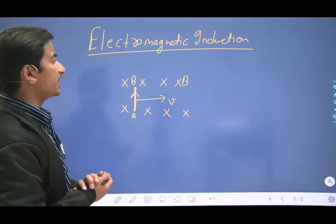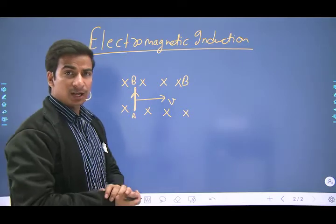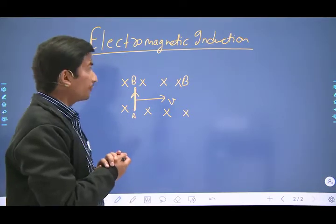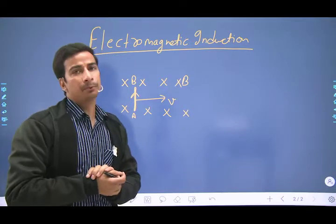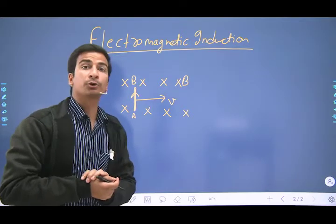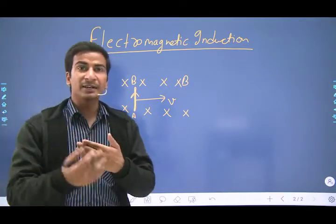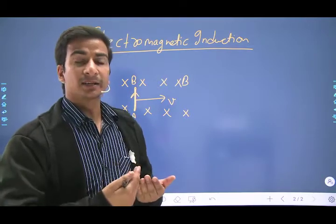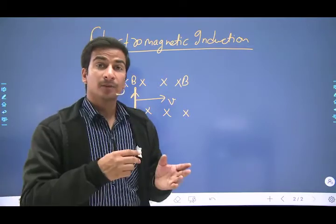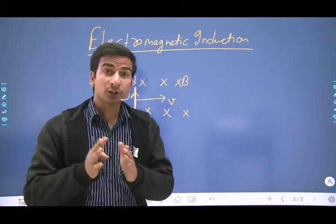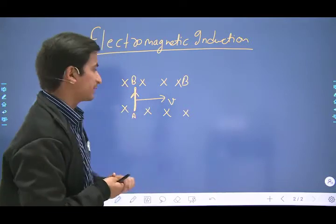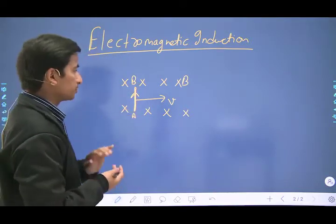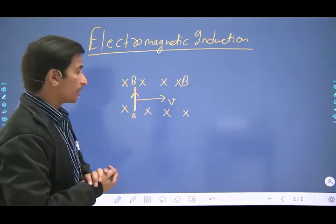In this way, electromagnetic induction is a phenomenon completely opposite to the production of magnetic field. Magnetic fields are produced by currents, and electromagnetic induction is the production of currents by changing magnetic fields — this is completely inverse to the production of magnetic field.